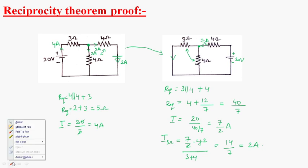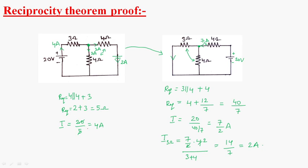If you observe in both these two cases, the current is 2 amperes in each case. So this is about Reciprocity Theorem. Thank you.